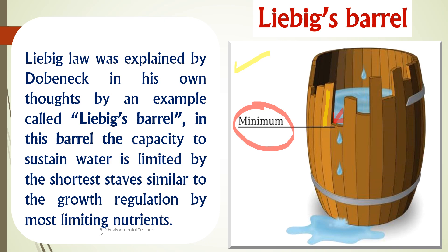Imagine you have a barrel that you want to fill with water, but this barrel is made of many wooden planks or staves. Each plank represents something the plant needs to grow, like sunlight, water, or nutrients like nitrogen or potassium. Now if one of these planks is shorter than the others, the water will start leaking out when it reaches the top of the short plank. No matter how tall the other planks are, the water cannot rise higher than the shortest plank.